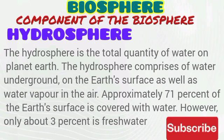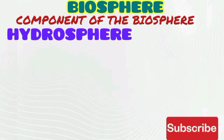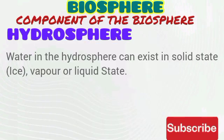The second part of the biosphere is the hydrosphere. The hydrosphere is the total quantity of water on planet earth. It comprises water on the ground, water on the surface of the earth, as well as water vapor in the atmosphere. Approximately 71% of earth's surface is covered with water. Water in the hydrosphere exists in solid state, vapor, or liquid state.